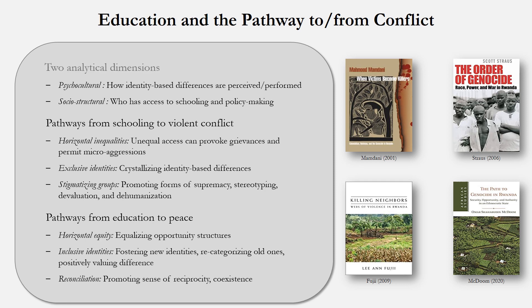We can measure the relationship between education and conflict along two analytical axes or dimensions. The psychocultural dimension is about how identity-based differences are perceived or performed, as the author of reading two reminds us that schooling is not always just a passive reflector of existing social conditions, but also an active amplifier of social categories and messages. The sociocultural dimension essentially concerns who has access to schools and how classrooms are set up. Notably, these dimensions work in both directions — they can either promote conflict or promote peace, although distinct factors may be pulling in opposite directions.